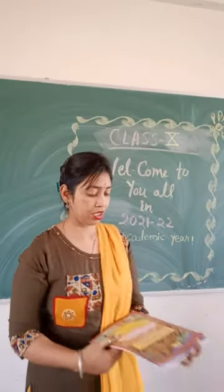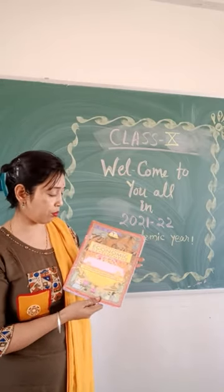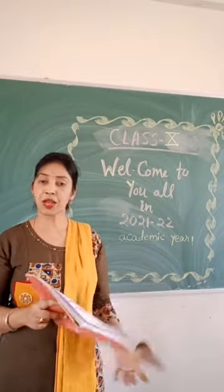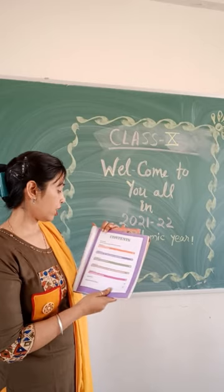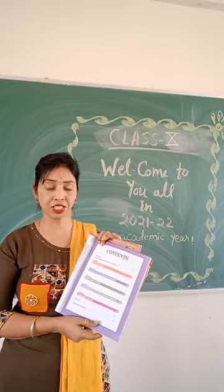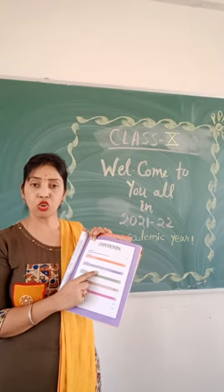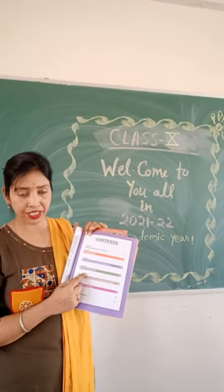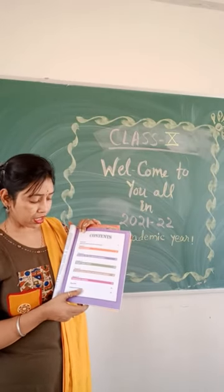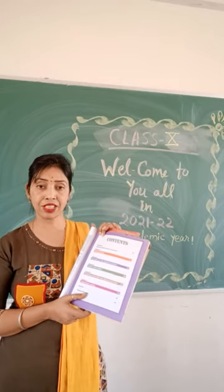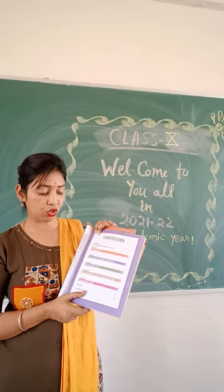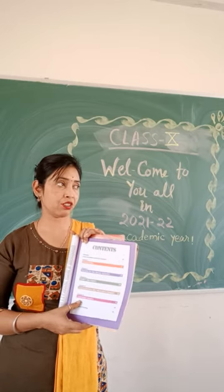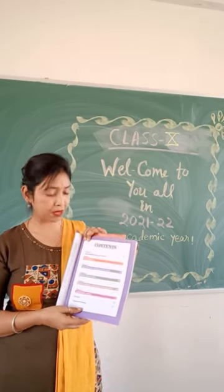The next book in Social Sciences is Understanding Economic Development — the Economics book. In this book we will study five chapters: Chapter 1 is 'Development,' Chapter 2 is 'Sectors of the Indian Economy,' Chapter 3 is 'Money and Credit,' Chapter 4 is 'Globalization and the Indian Economy,' and Chapter 5 is 'Consumer Rights,' which is based on our constitution. So in total, five chapters we will study in the Economics section.